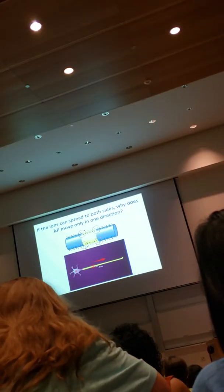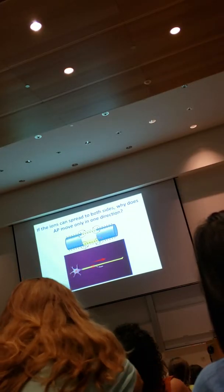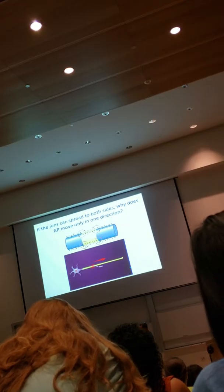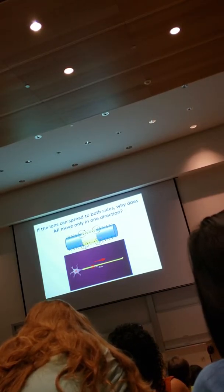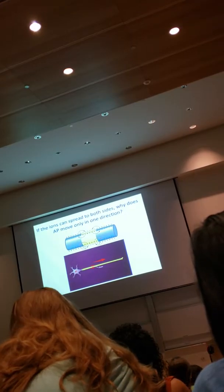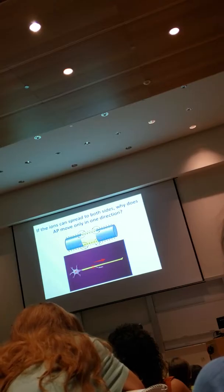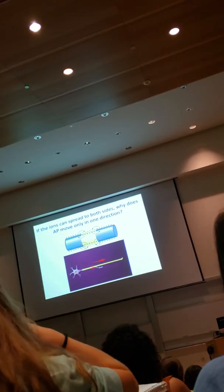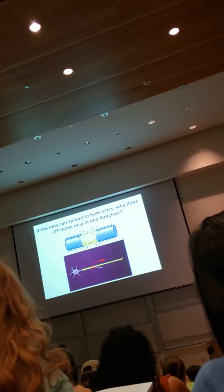But then we asked a more complicated question: as the action potential propagates towards the axon terminal, ions diffuse to the front, which is fine, but they also diffuse to the back. Do we have voltage-gated channels there? Yes, that's the axolemma. So the question was: why doesn't the action potential go backwards and forwards and backwards repeatedly, which would not be very efficient?